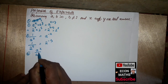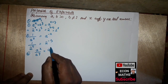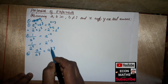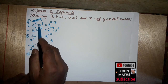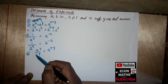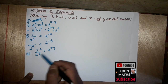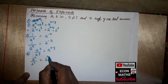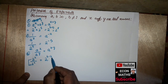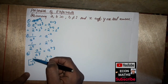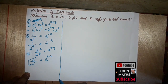The third property is: a to the power x over a to the power y equals a to the power x minus y. When bases are the same in a fraction, the powers are subtracted. For example, 2 to the power 6 over 2 squared becomes 2 to the power 6 minus 2. The difference from property one is that here we have division, whereas in property one we have multiplication.